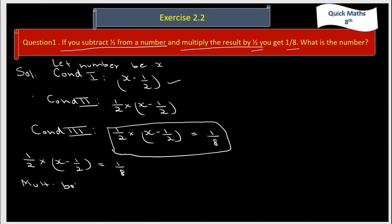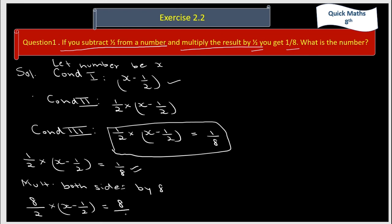Multiplying both sides by 8: on the right hand side, 8 by 8 becomes 1. On the left hand side, 8 divided by 2 gives 4. So the left hand side becomes 4 into (x minus 1 by 2), and the right hand side becomes 1.